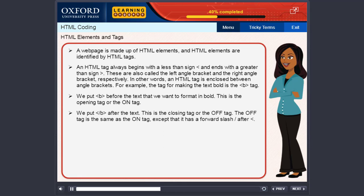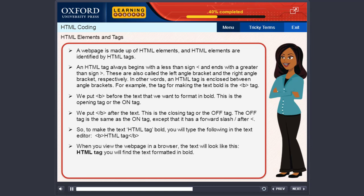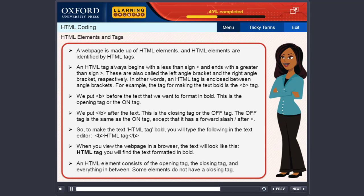We put the slash B tag after this text. This is the closing tag or the off tag. The off tag is the same as the on tag except that it has a forward slash after the less than sign. So to make the text HTML tag bold, you will type the following in the text editor: opening B tag followed by the text HTML tag and then the closing B tag. When you view the web page in a browser, you will find the text formatted in bold. An HTML element consists of the opening tag, the closing tag and everything in between. Some elements do not have a closing tag.